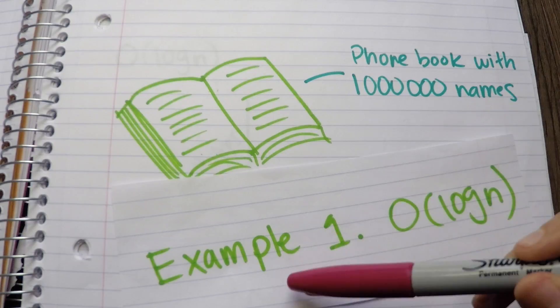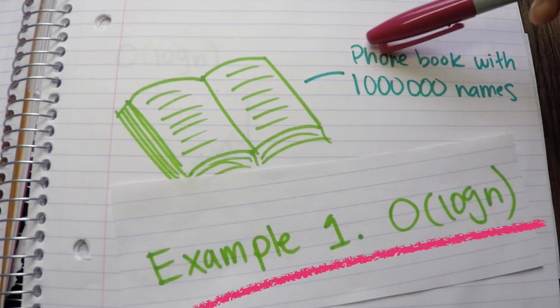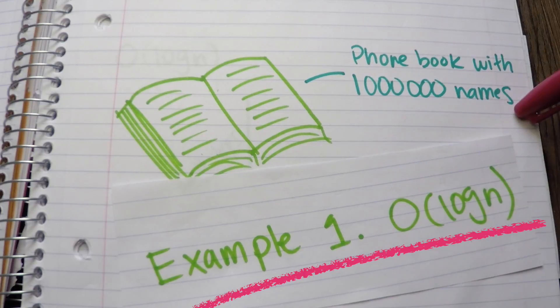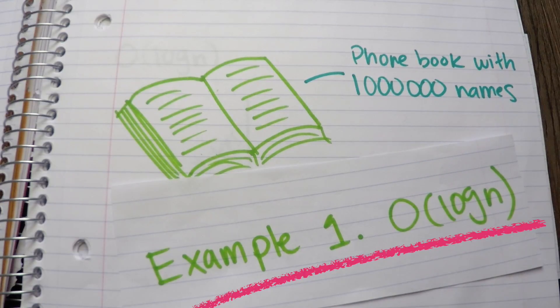Example 1, O(log n). Imagine I have a phone book with one million names, and I have to use it because I lost my phone with all my contacts in it and I need to find my friend's number.